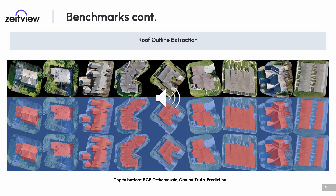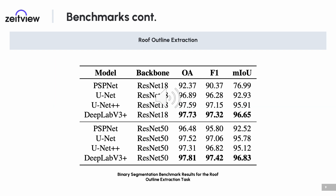We treat the roof outline extraction task as a binary segmentation problem where we want to segment the roof from the background. This task is desirable when you want to remove the background during downstream analysis, as well as locating rooftops in larger neighborhood scan orthomosaics. For this benchmark, we evaluate on the ZRG test subset using the UNet, UNet++, PSPNet, and DeepLab V3+ segmentation architectures.